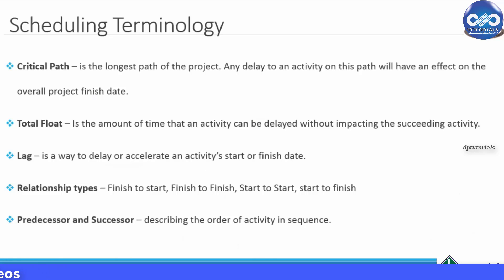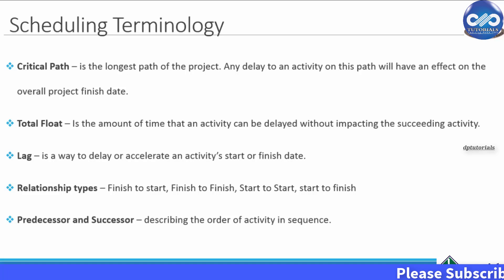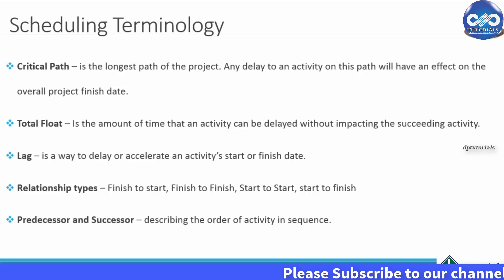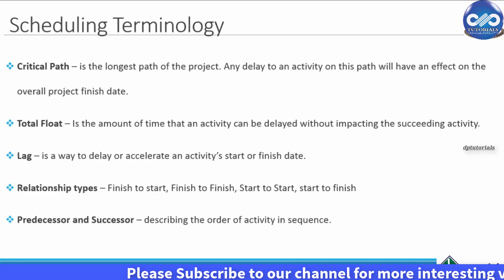There are four types of relationships between two activities: Finish to Start, Finish to Finish, Start to Start, and Start to Finish. We will be discussing these relationships in detail while preparing a schedule.